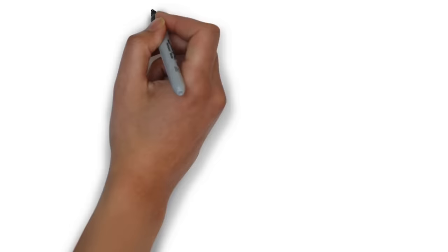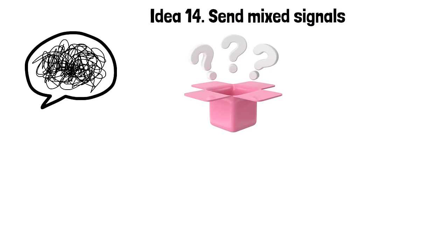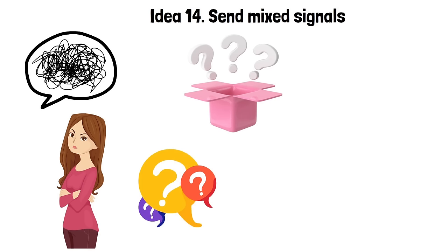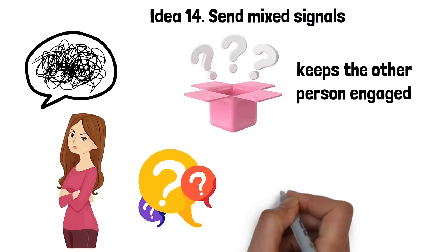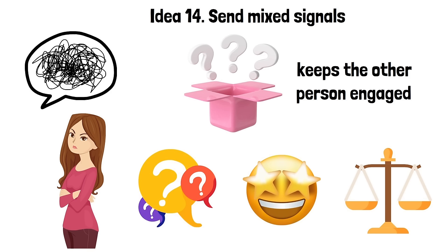Idea 14. Send mixed signals. Sending mixed signals is an interesting aspect of the art of seduction. It involves the deliberate alternation between conflicting messages, creating a sense of intrigue and mystery. This could mean being warm and attentive one moment and somewhat distant the next. The uncertainty stirs curiosity as the person on the receiving end is left wondering about the shift in behavior. This strategy keeps the other person engaged as the unpredictability provokes interest and makes them want to understand what's going on. By not being too straightforward or predictable, you become more intriguing. It's this balance between revealing and concealing, between interest and indifference, that keeps the other person hooked, wanting to decipher the enigma that you are.